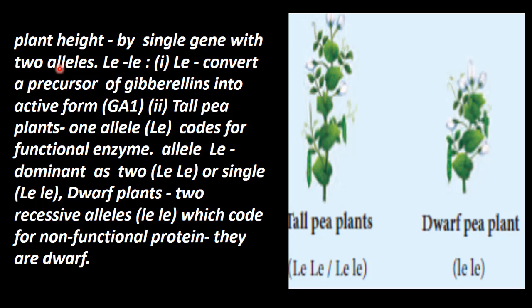In the pea plant, these genes are actually named capital LE and small LE. Capital LE is the dominant allele and small LE is the recessive allele.